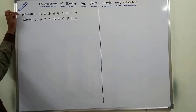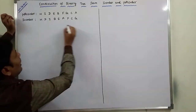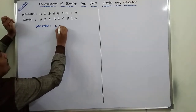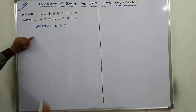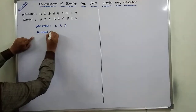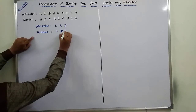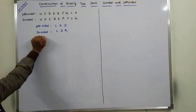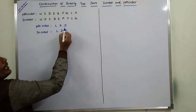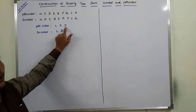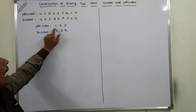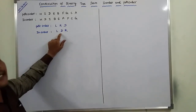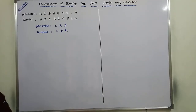We already know that post-order can be denoted by L, R, D, and in-order can be denoted as L, D, R. In post-order, D means visiting the root node, R means visiting the right sub-tree, and L means visiting the left sub-tree. In in-order, R means visiting the right sub-tree, D means visiting the root, and L means visiting the left sub-tree.